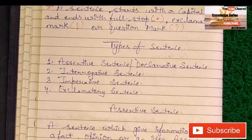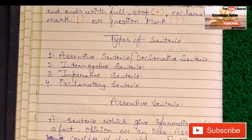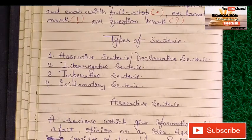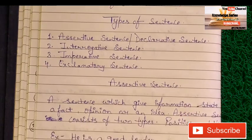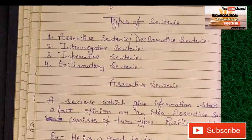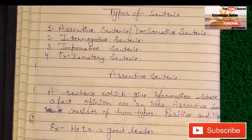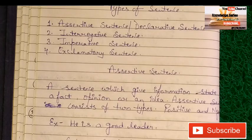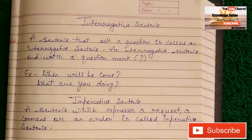Assertive sentences consist of two types: positive and negative. Examples: 'He is a good leader' — this is a positive assertive sentence. 'She will not be buying clothes' — this is a negative assertive sentence.